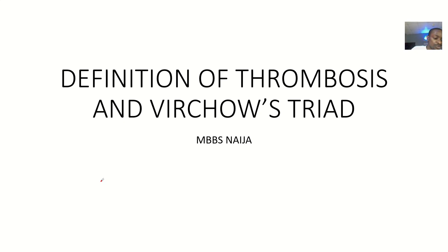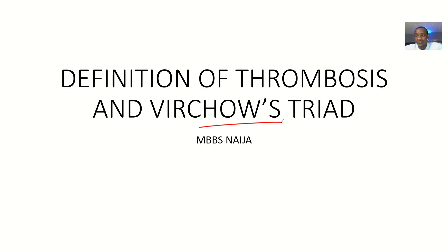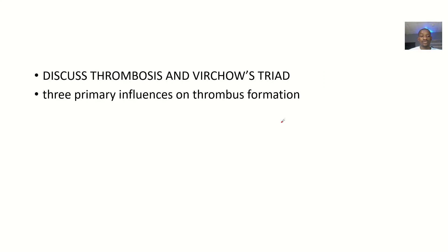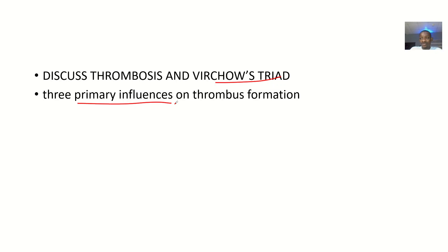We're looking at the definition of thrombosis, and there is a triad in thrombosis known as Virchow's triad. We'll also be looking at that triad. Right after the definition of thrombosis, we look at Virchow's triad — they're just trying to look at what the primary influences on thrombosis formation are, the three things that will lead to the formation of a thrombosis.